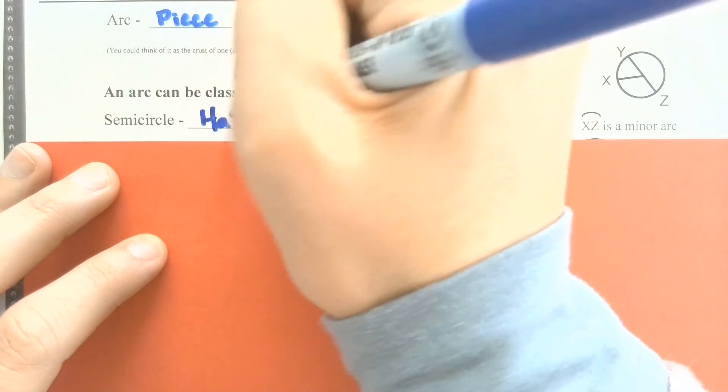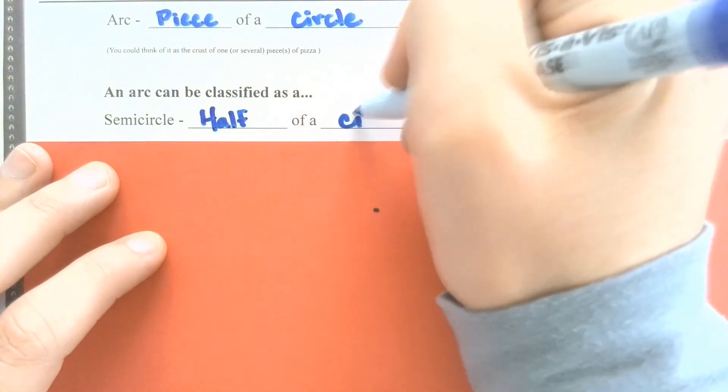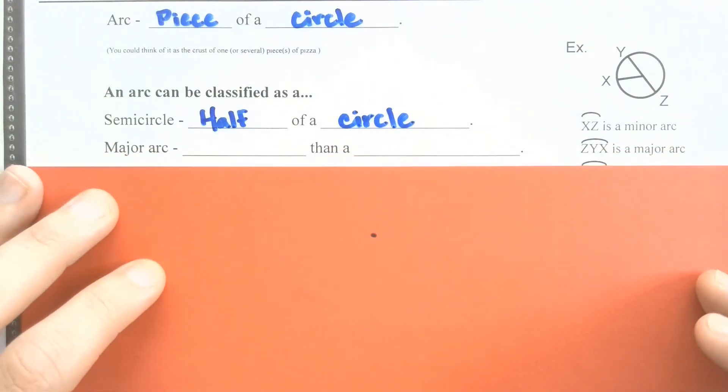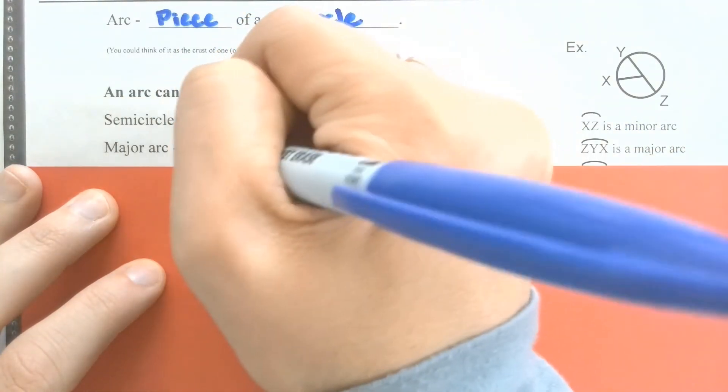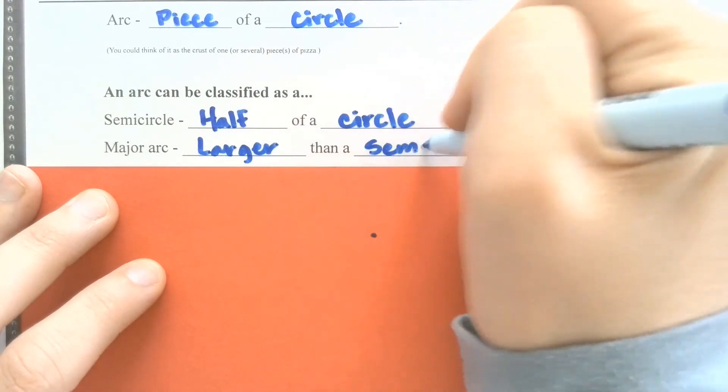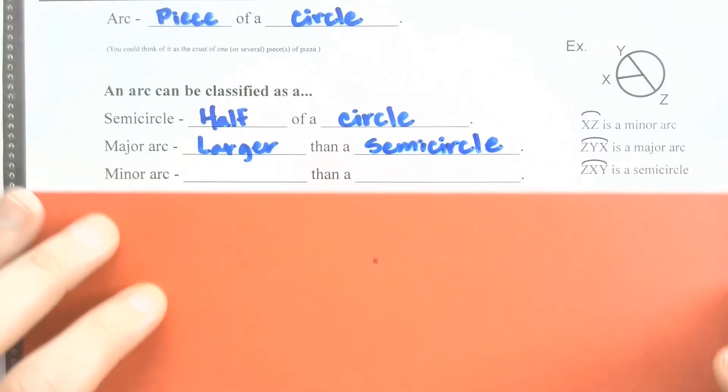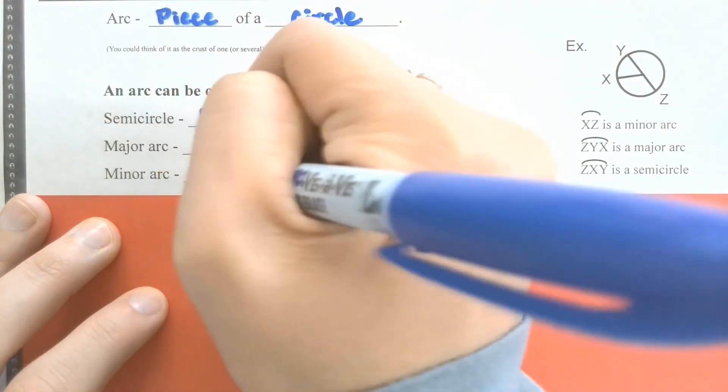And we can classify an arc three different ways. It could be a semicircle, which is exactly half of a circle. It could be a major arc, which means that it is larger than a semicircle. Or it could be a minor arc, which means it is smaller than a semicircle.